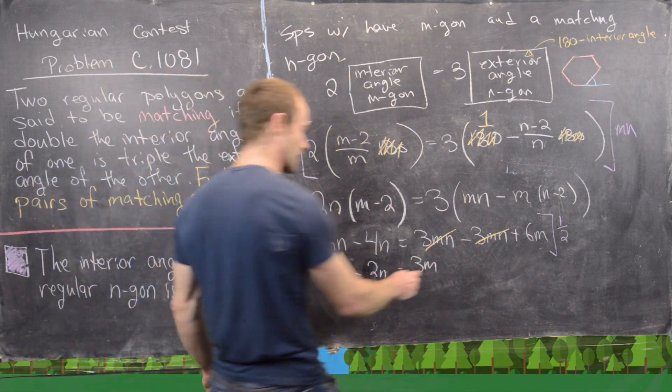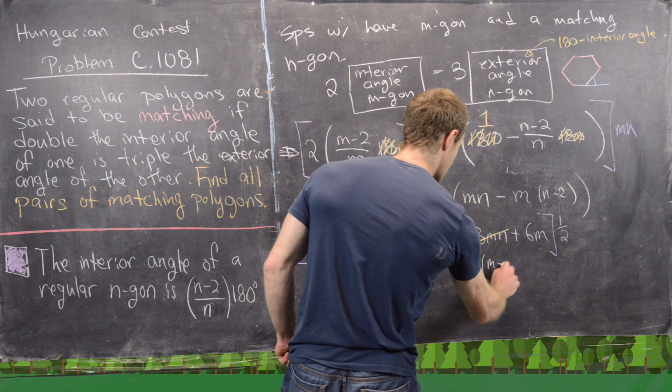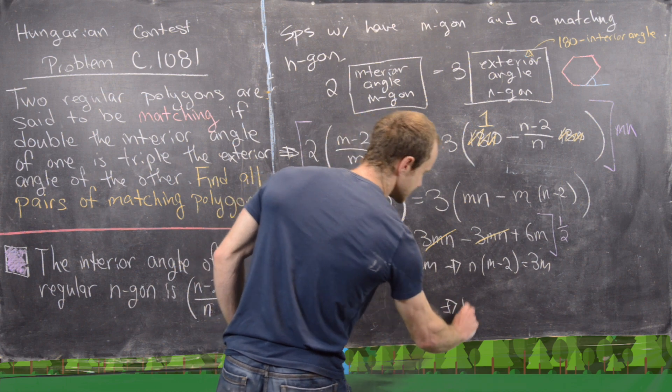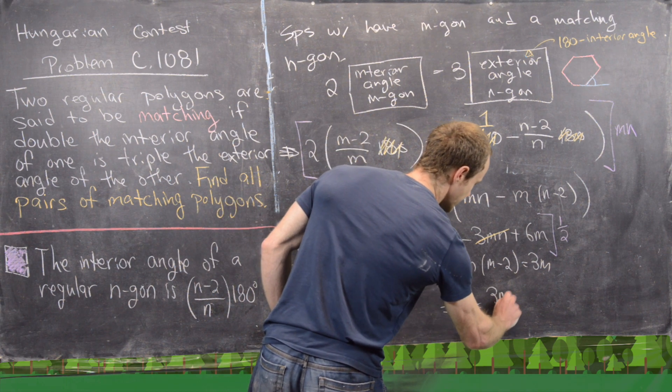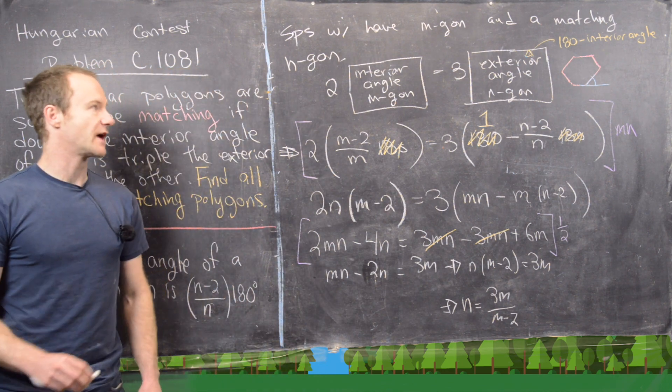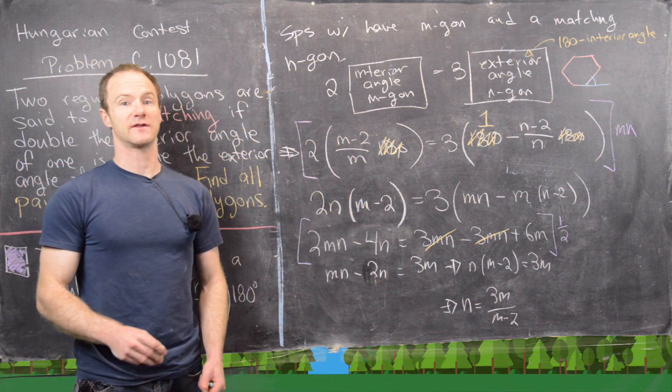That's going to give me mn - 2n equals 3m. I can factor an n out of the left-hand side, and that gives me n(m-2) equals 3m. Or in other words, I have n equals 3m/(m-2).